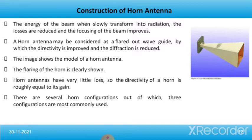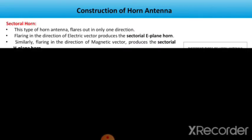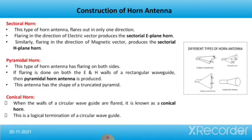The image shows the model of a horn antenna. The flaring of the horn is clearly shown here. Horn antennas have very little loss, so the directivity of the horn is roughly equal to its gain. There are several horn configurations, of which three are most commonly used. The first is the sectoral horn, where the antenna flares out in only one direction. Flaring in the direction of the electric vector produces the sectoral E-plane horn, and flaring in the direction of the magnetic vector produces the sectoral H-plane horn. The second is the pyramidal horn, which has flaring on both sides. If flaring is done on both the E and H walls of a rectangular waveguide, a pyramidal horn antenna is produced, and this antenna has the shape of a truncated pyramid.